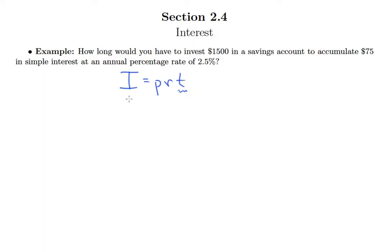So what's I? Well, it says you want to accumulate $75 in simple interest, so I is clearly 75.